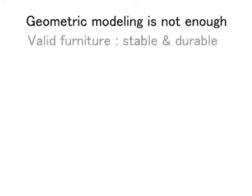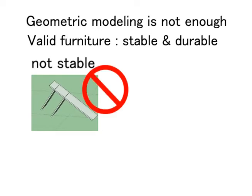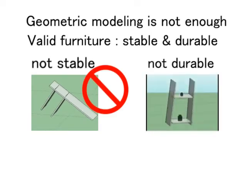However, just geometric modeling is not enough for valid furniture design. The result has to be stable and durable. By stable we mean that the furniture does not topple. By durable we mean that the furniture does not collapse.